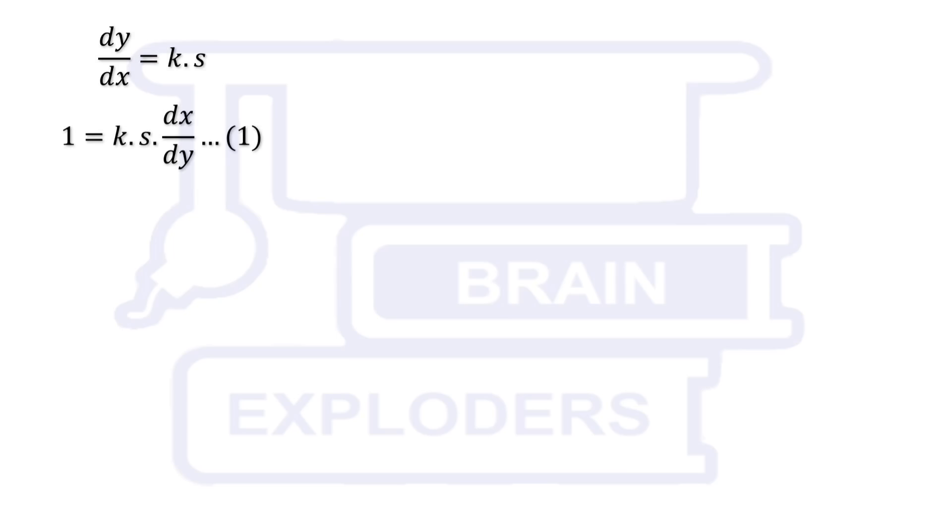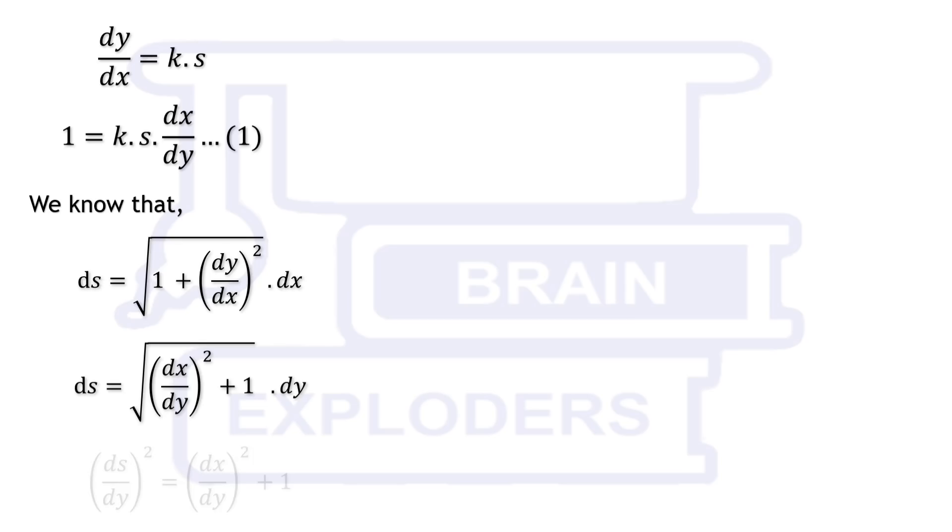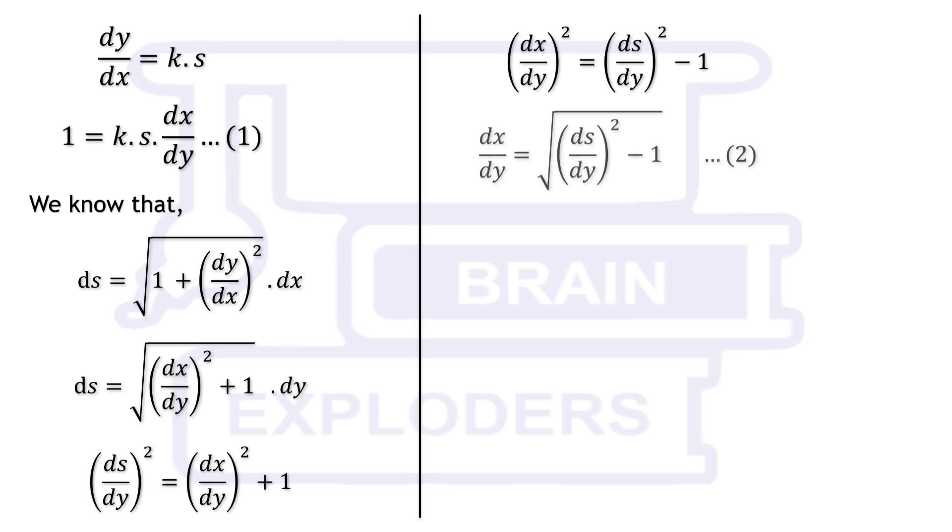Transform this equation and write 1 equals to ks dx by dy. For the length of the curve we can use the formula ds equals to under root 1 plus dy by dx square or ds equals to under root dx by dy square plus 1 dy. Calculate dx by dy from this.